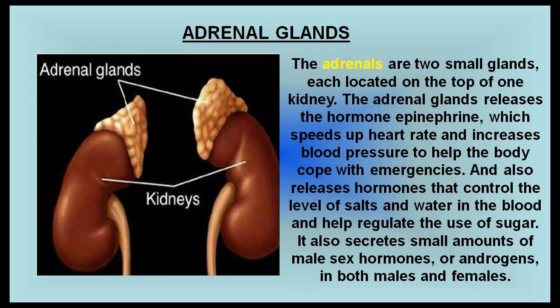The adrenals are two small glands, each located on top of one kidney. The adrenal glands release the hormone epinephrine, which speeds up heart rate and increases blood pressure to help the body cope with emergencies. They also release hormones that control the level of salts and water in the blood, help regulate the use of sugar, and secrete small amounts of male sex hormones called androgens in both males and females.